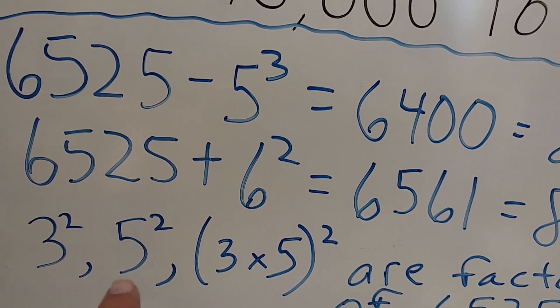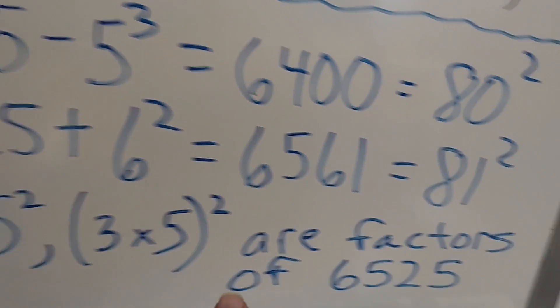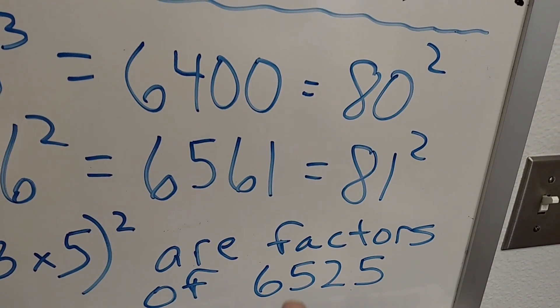If I take 5 squared, which is 25, 25 evenly divides into 6,525.